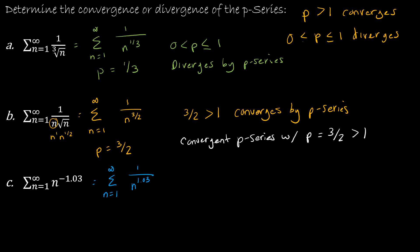Now I can say that p is greater than 1 because p is equal to 1.03. So this is a convergent p series with p equal 1.03, which is greater than 1.